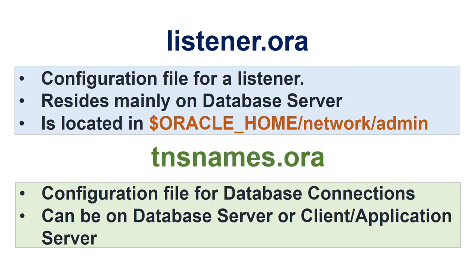listener.ora is a configuration file for a listener. It resides mainly on the database server and is located in Oracle Home network admin. tnsnames.ora is used for database connection. It can reside on the database server or client application server and is mostly used for application connectivity.